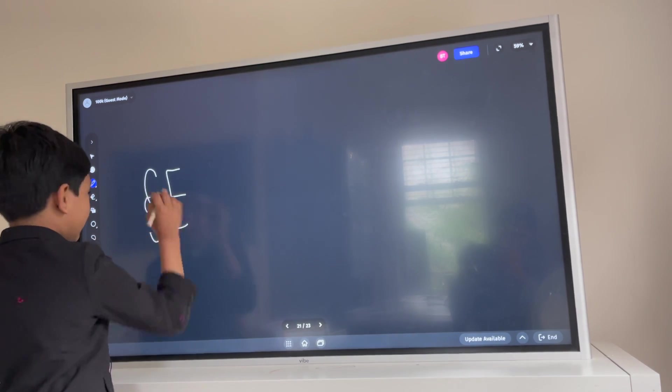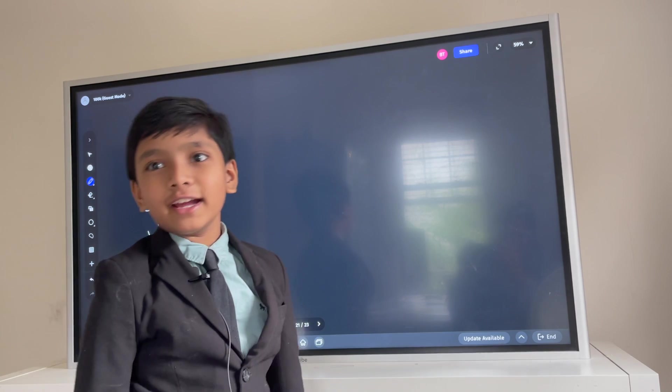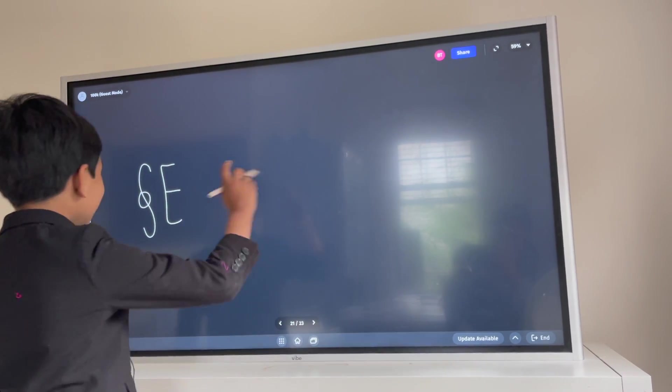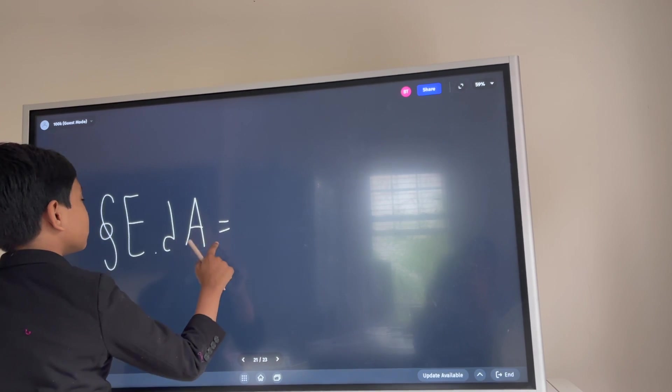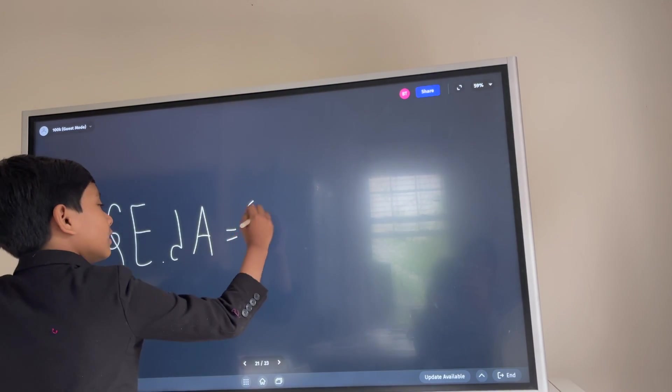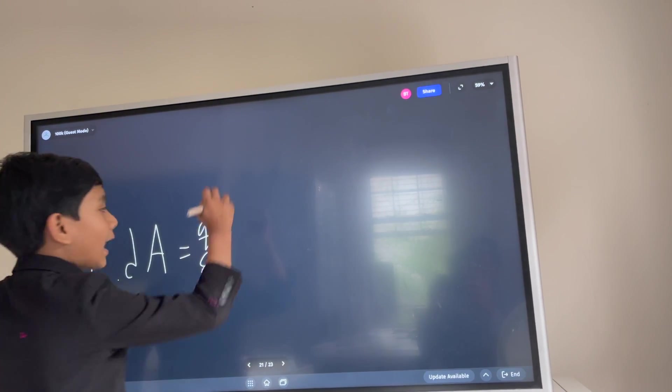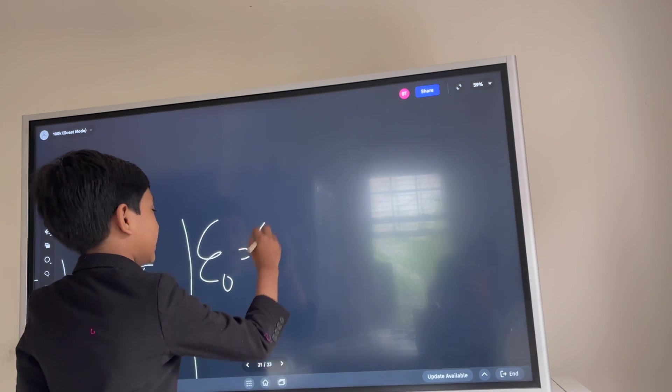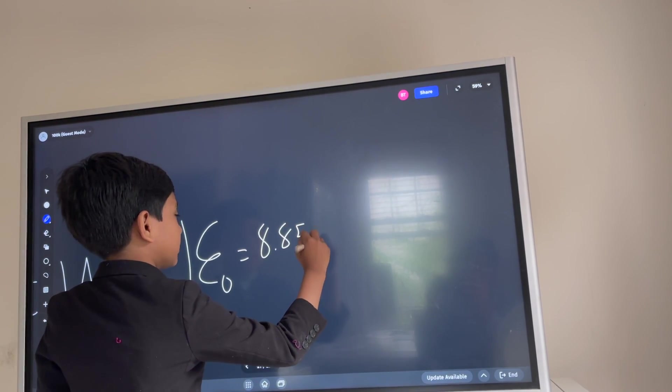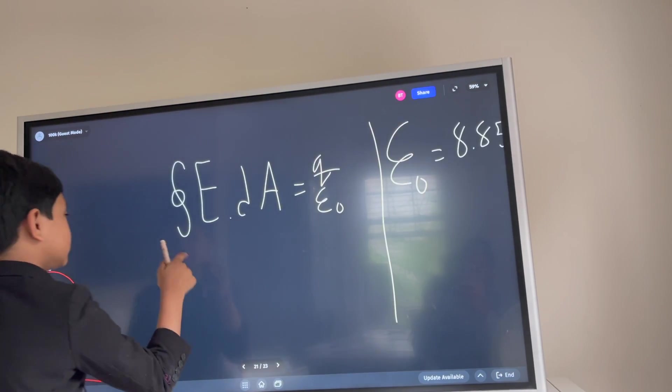And you also have to put the onion ring, or closed integral for science-y people. So, E dot dA is equal to Q over epsilon naught, our good friend epsilon naught. Everybody knows who he is, unless you're new to the series.